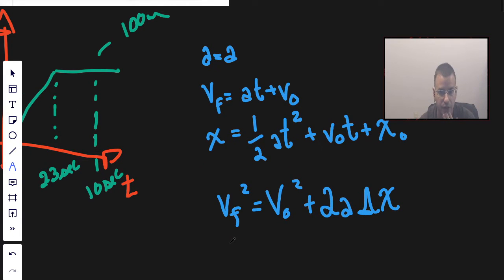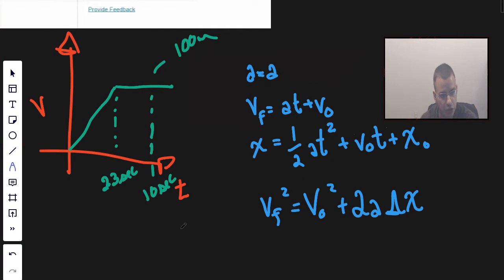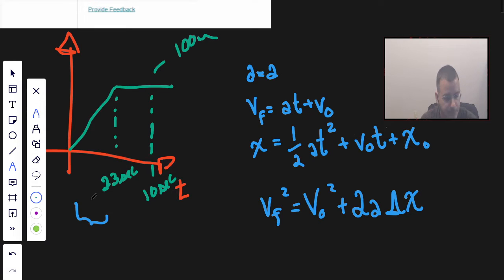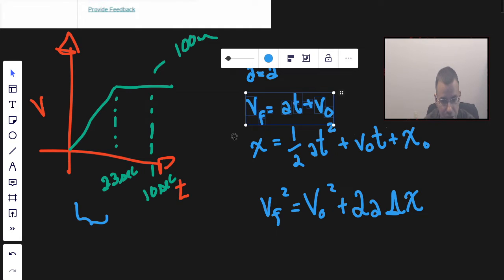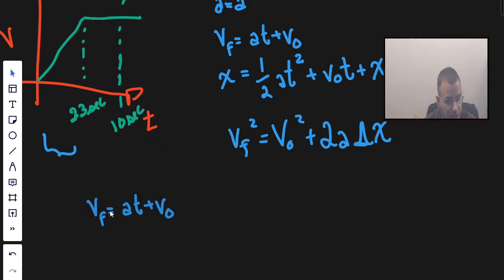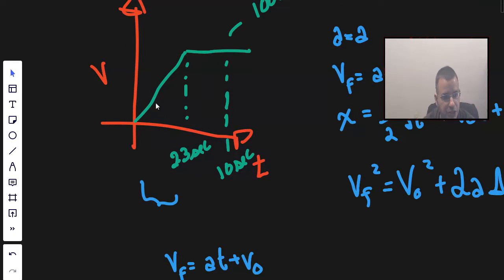For delta x, it's just the difference in two positions: x_final minus x_initial. Now we have these equations written up and we're going to try to apply them to our picture. I'm going to look at the first section and try to use this second equation. I'll copy it down so I have it available.